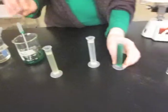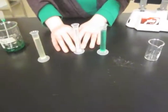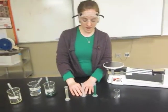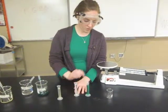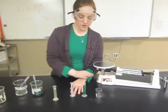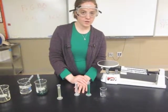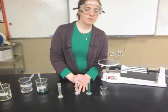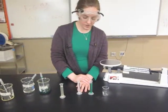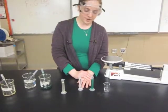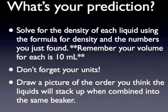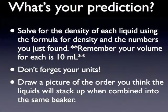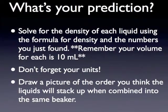Now that you have 10 milliliters of each solution, draw a picture on your paper of what you think the stacking column will look like when all the liquids are poured into the small beaker. Which one do you think will be at the bottom, which in the middle, and which on top? Take a minute to find the density of each of the three liquids, then draw a picture as your hypothesis. Solve for the density for each liquid using the mass you found and a volume of 10 milliliters.